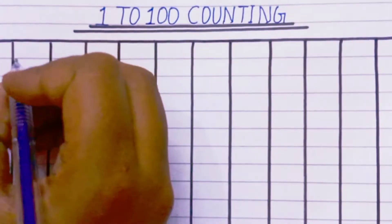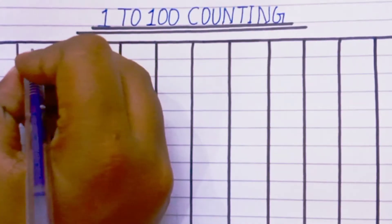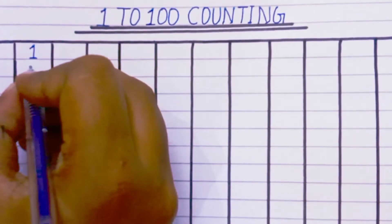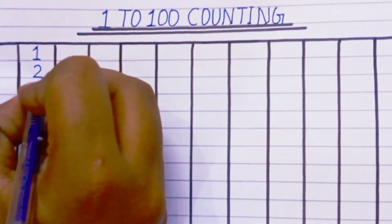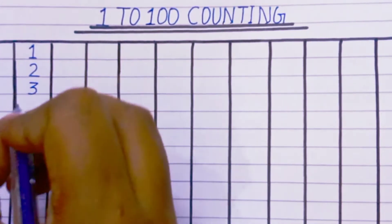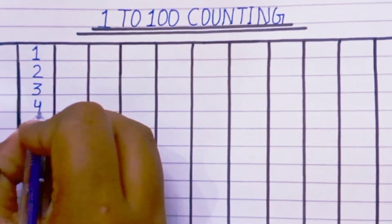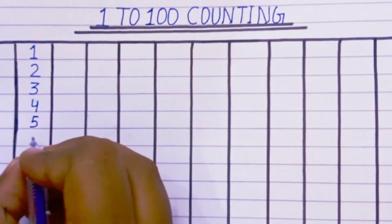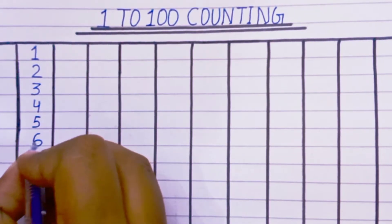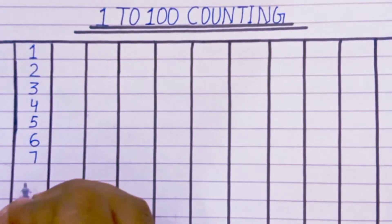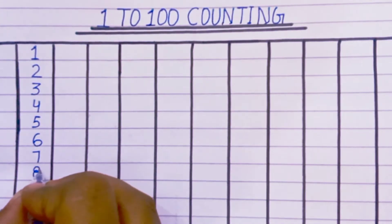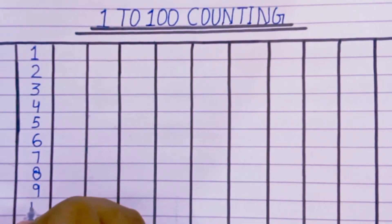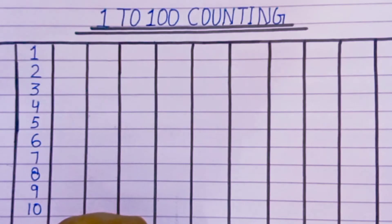Let's write 1 to 100 countings. 1, 2, 3, 4, 5, 6, 7, 8, 9, 10.